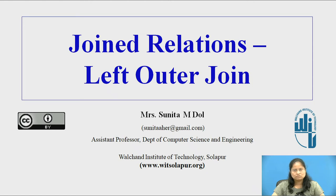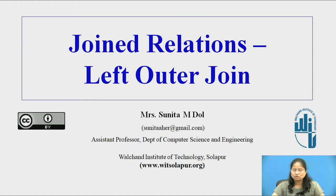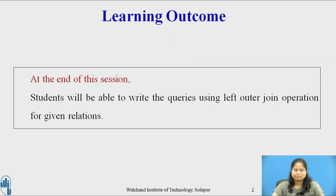The outer join operation computes the join and then adds the tuples from one relation that does not match tuples in another relation to the result of the join. This outer join operation is used to avoid the loss of information. At the end of the session, students will be able to write the queries using left outer join operation for given relations.